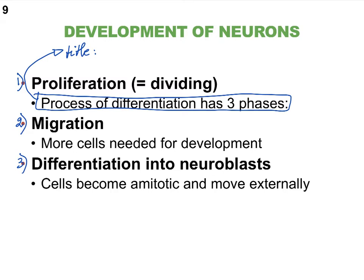On slide 9, I made some mistakes in how I arranged the text, so follow what I'm saying here. Where it says the process of differentiation has three phases, that really should be the title that precedes the three phases: proliferation, migration, and differentiation. In order for the ectodermal cells to make that neural tube and slowly become neurons, we need to go through some steps. The obvious first step is that we need to make many, many more cells by means of mitotic divisions — another way of referring to that is proliferation, meaning to make more.